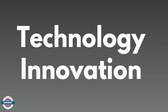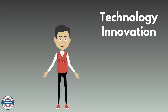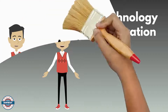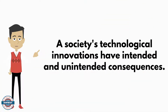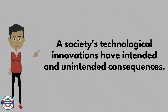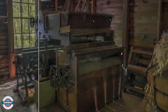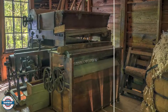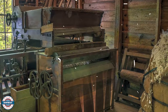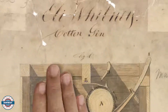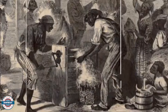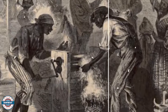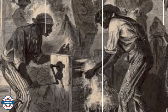Lastly, we're going to discuss the connecting theme of technological innovation. Technological innovations have consequences, both intended and unintended, for a society. If you need proof, take a look at Eli Whitney's invention of the cotton gin. The invention of the cotton gin increased the southern plantation owner's need for slave labor — not good.